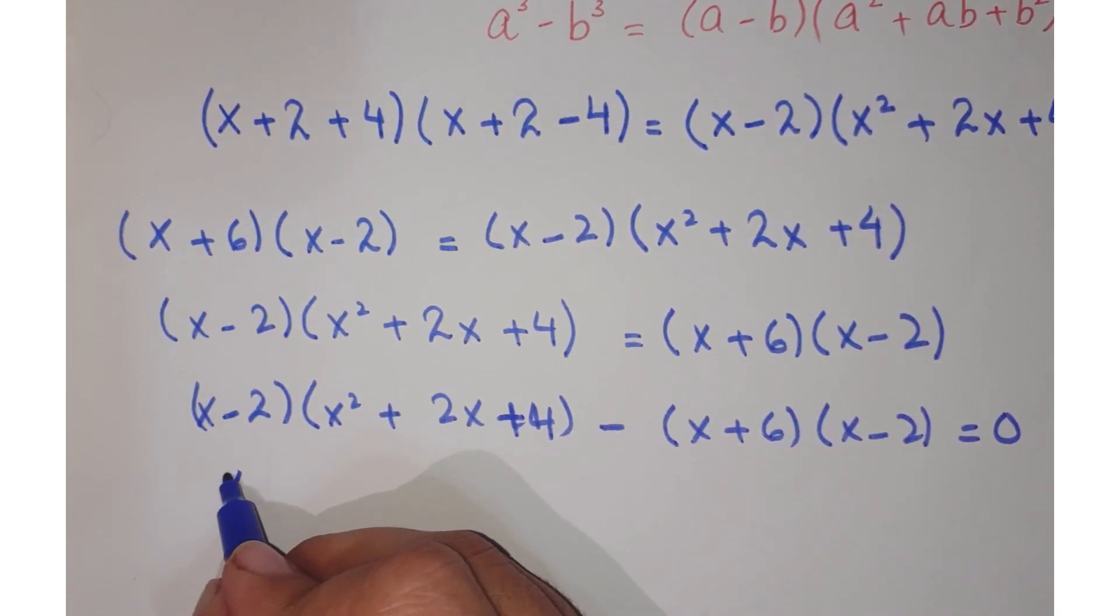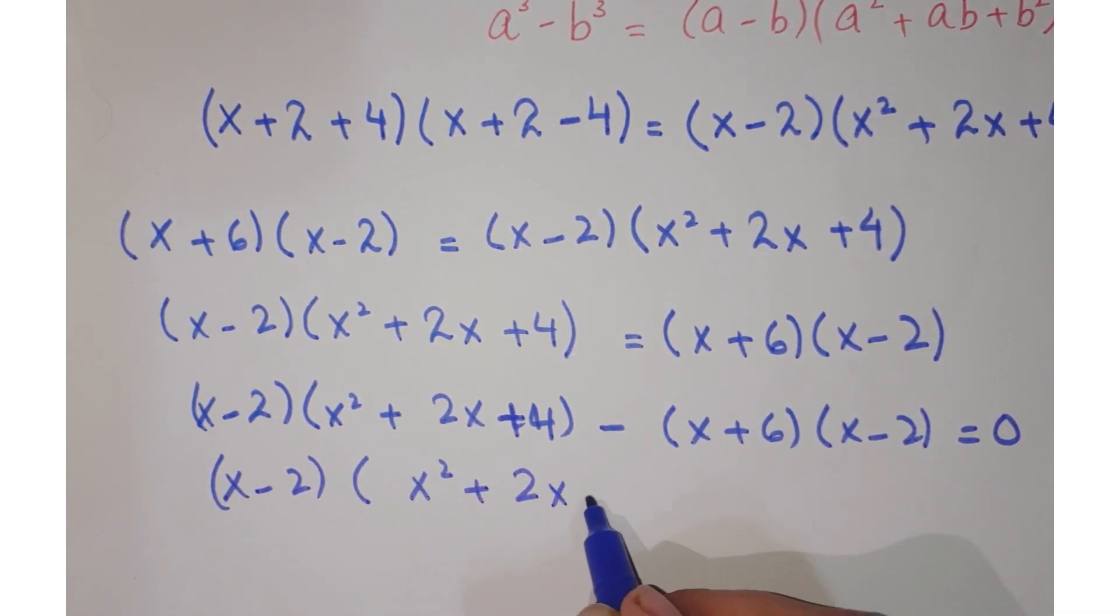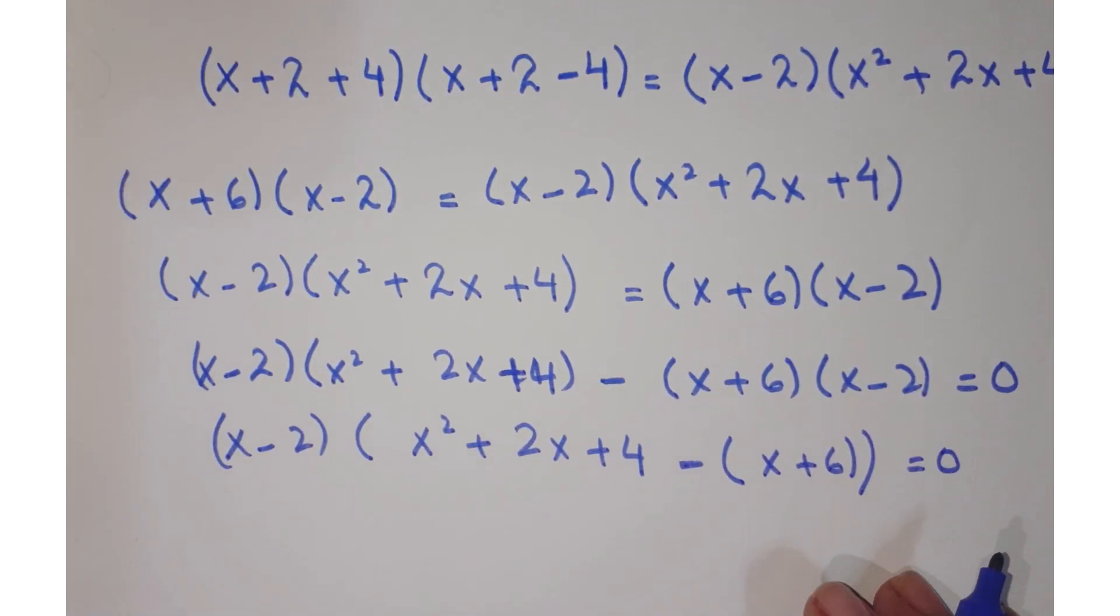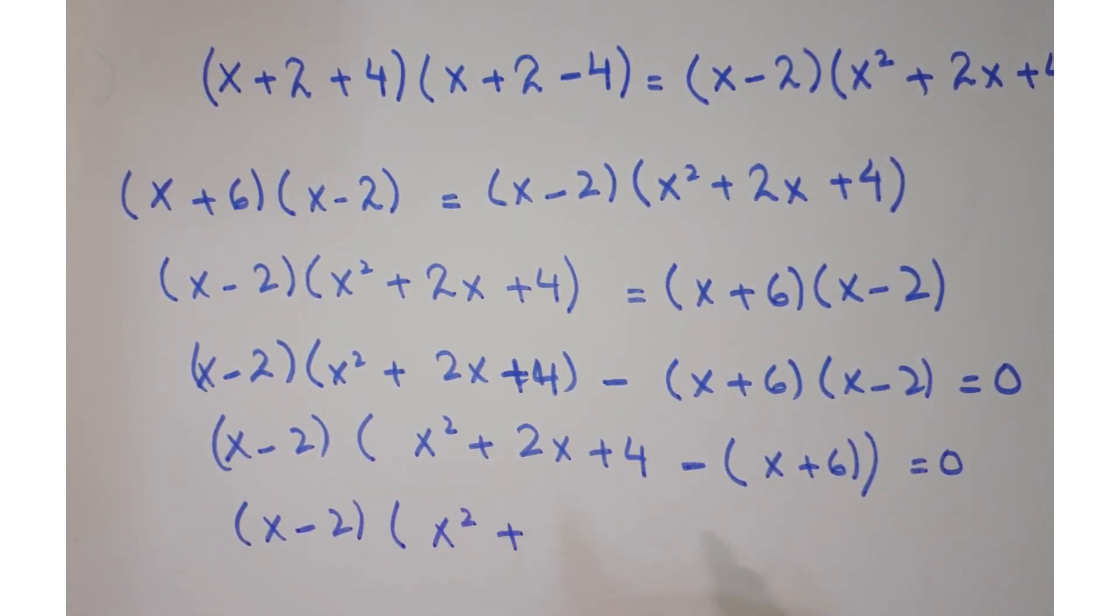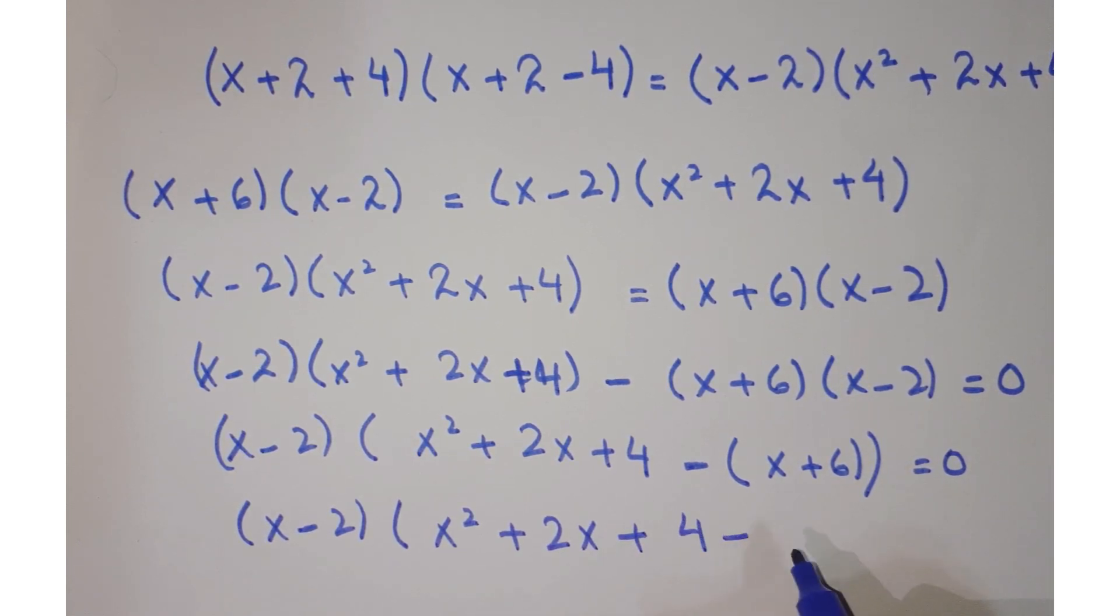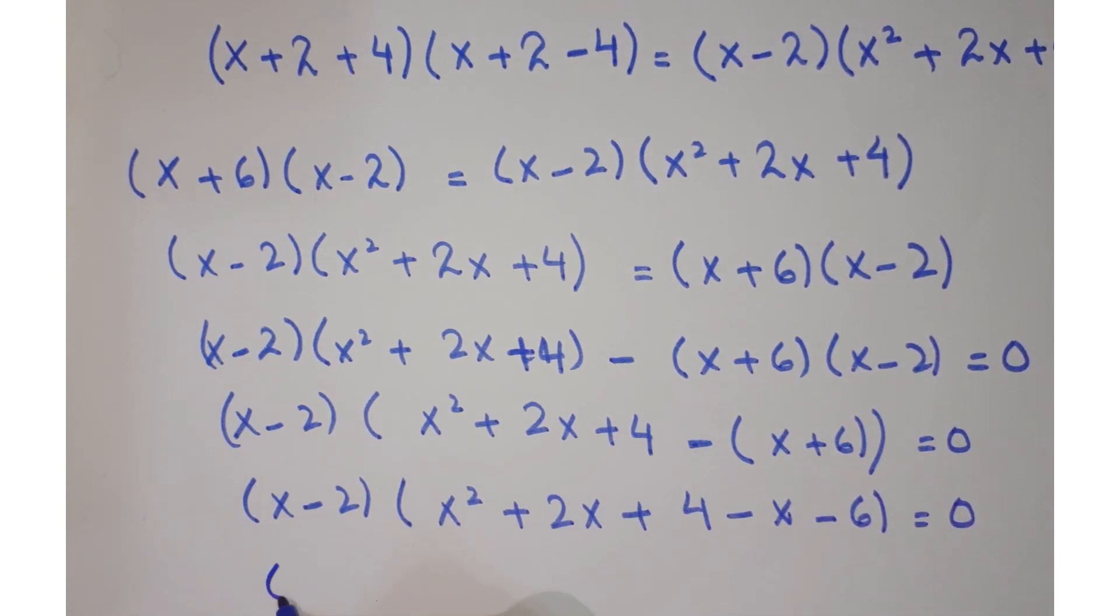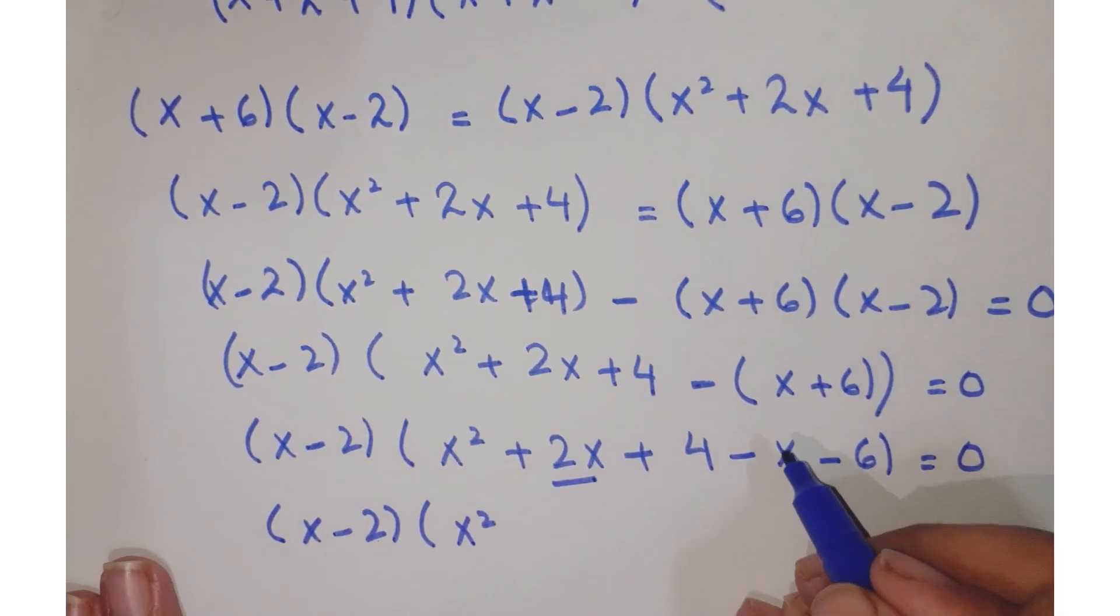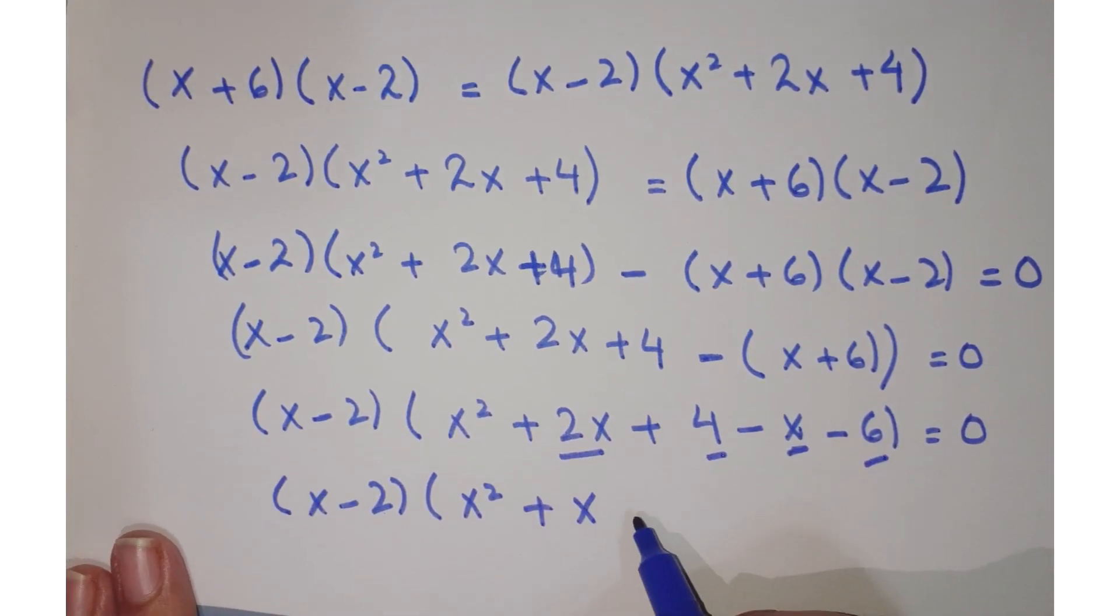Now taking x-2 common, you are left with (x-2)[x² + 2x + 4 - (x+6)] = 0. Further, (x-2)(x² + 2x + 4 - x - 6) = 0, or you have (x-2)(x² + x - 2) = 0.